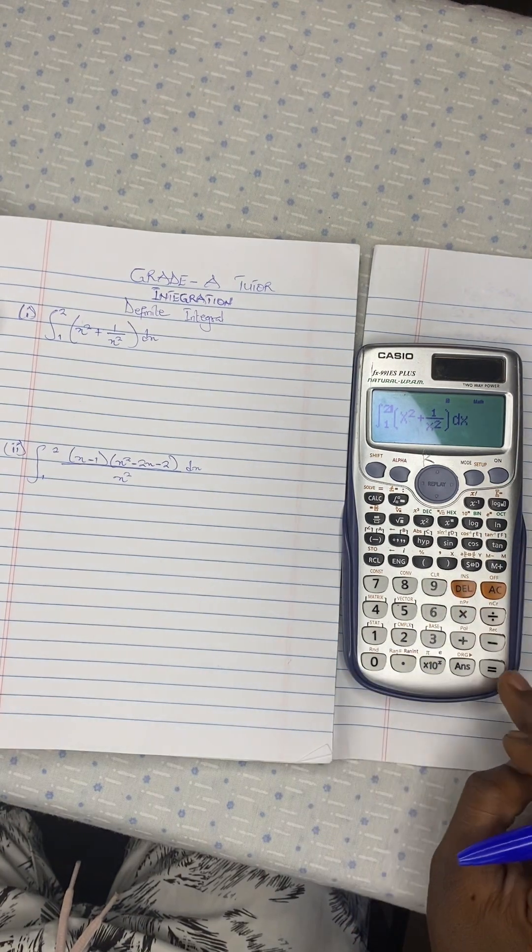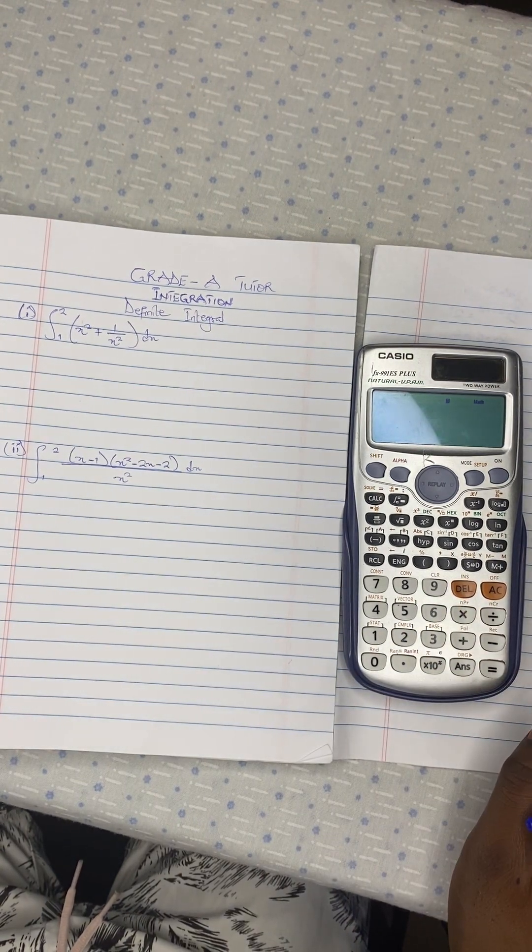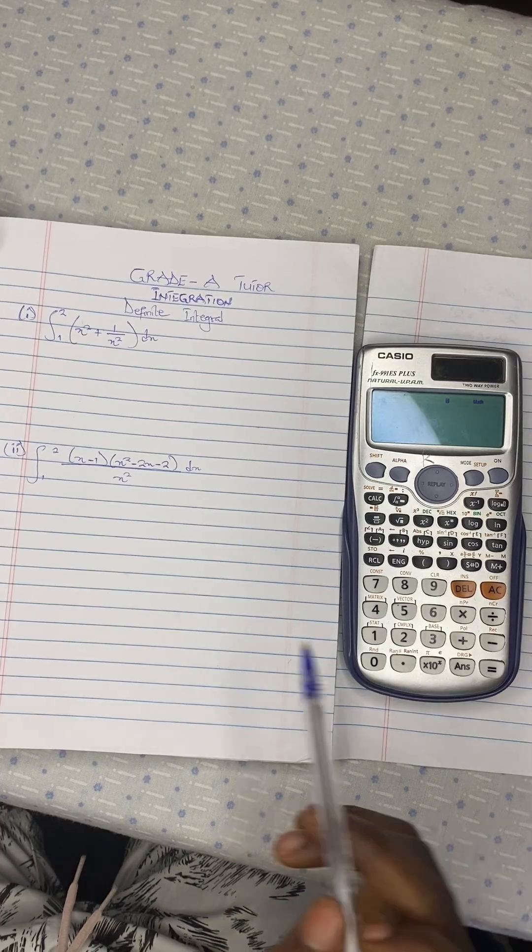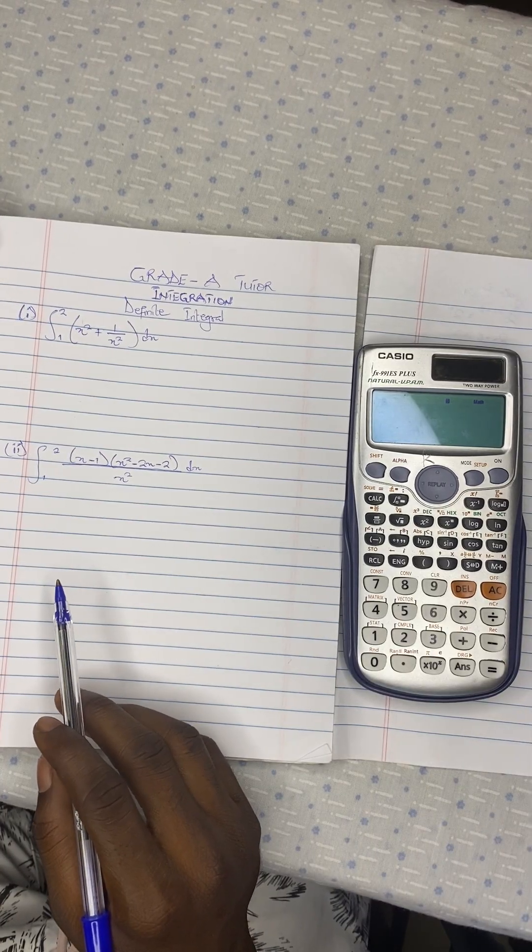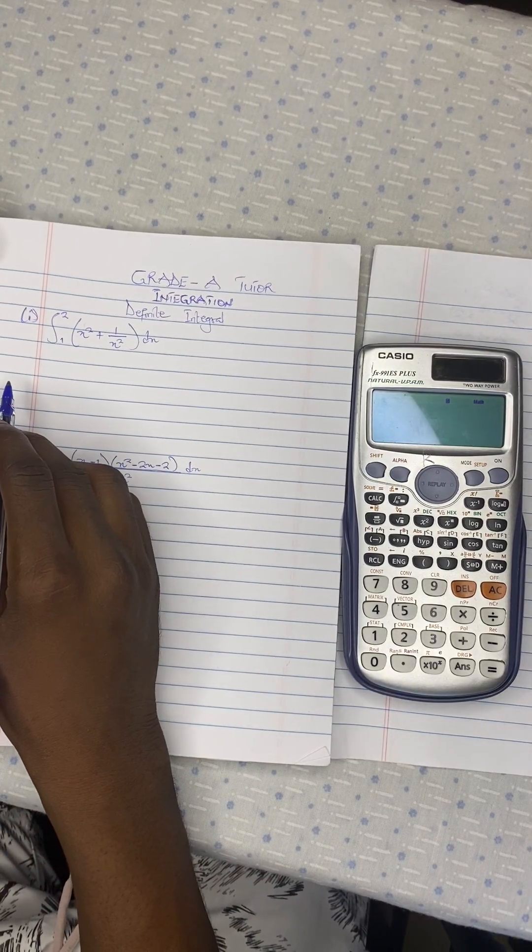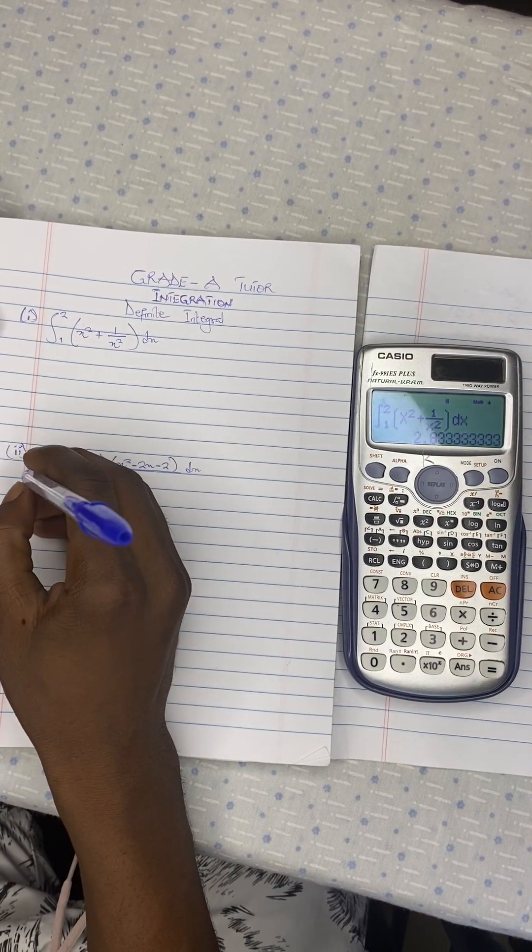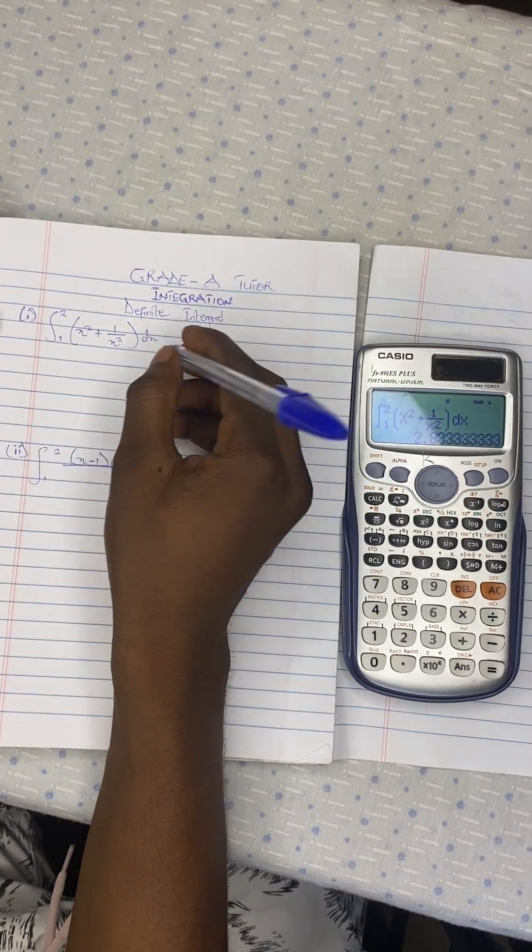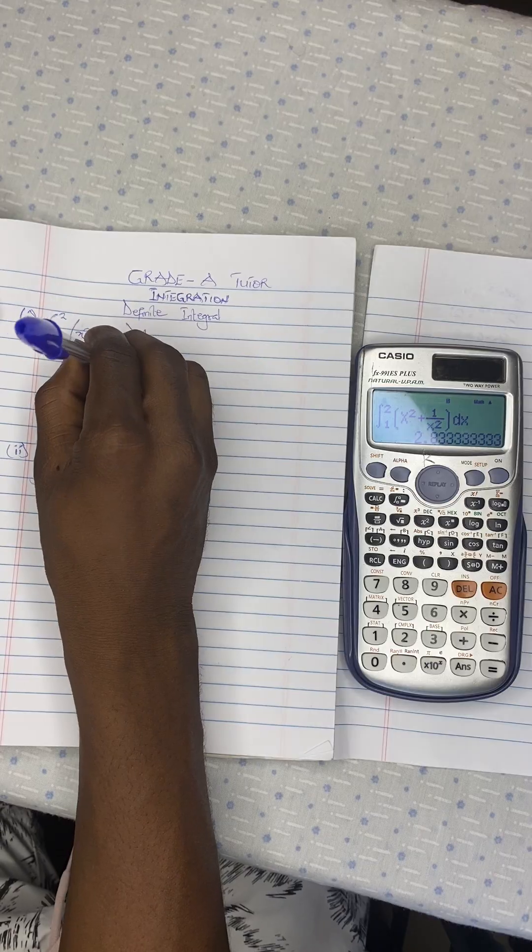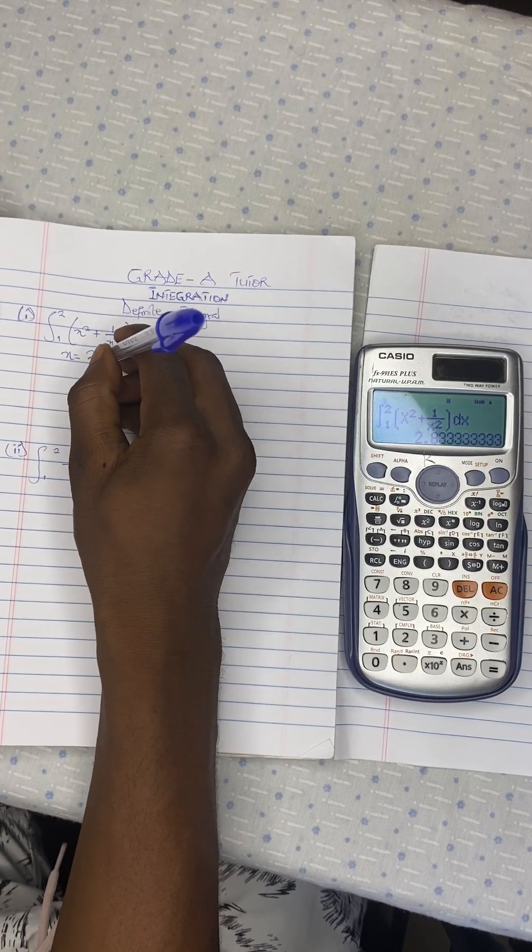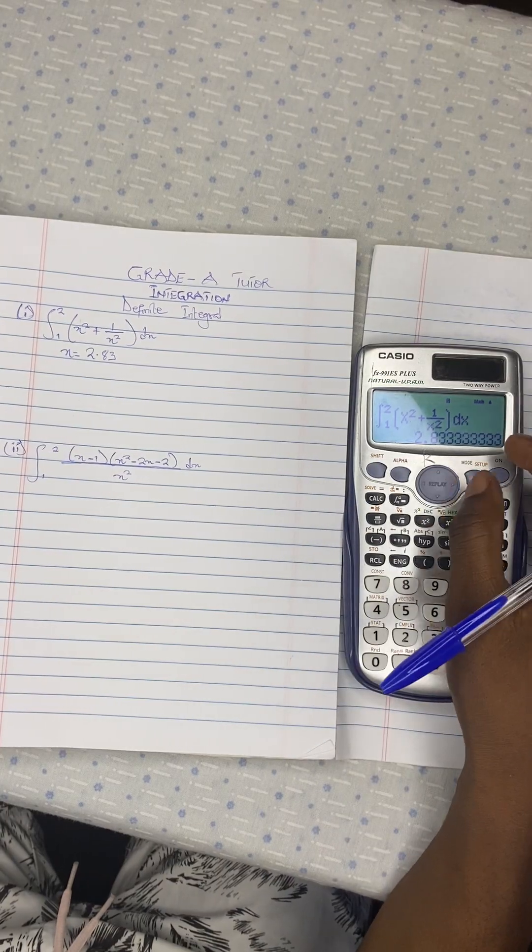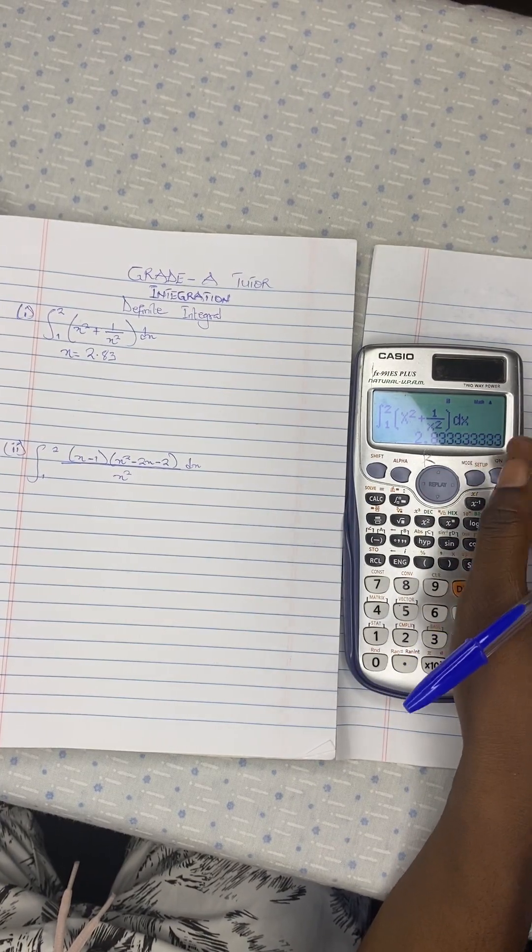All that you need to do is you press on the equal sign and you wait for your answer. So your x is equal to 2.83. You see how it's kept long before coming, that is why...